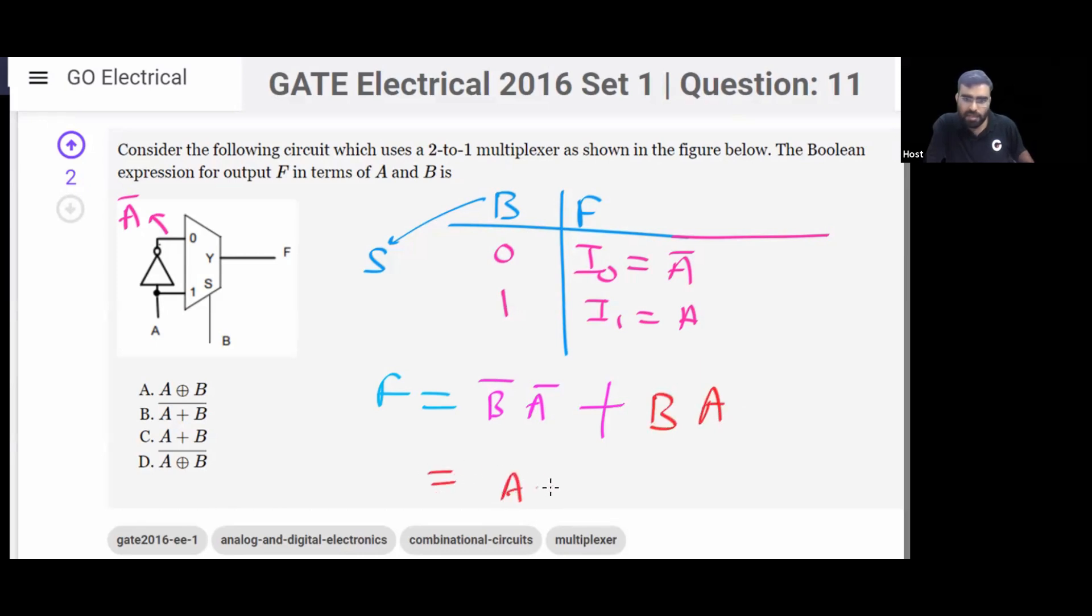So that is same as A XNOR B. That is A XNOR B, that is same as complement of XOR. That is same as complement of XOR.